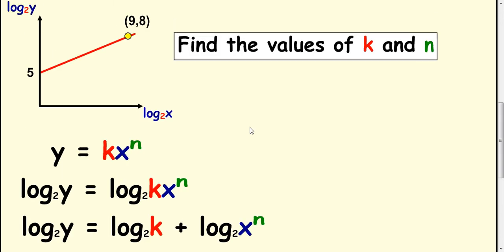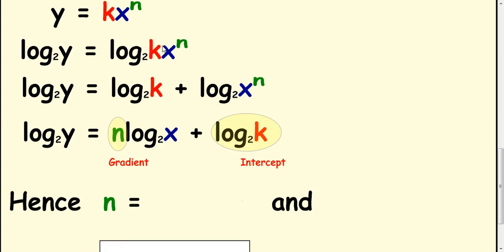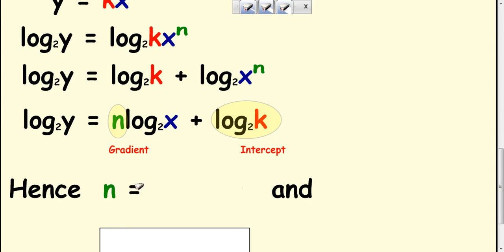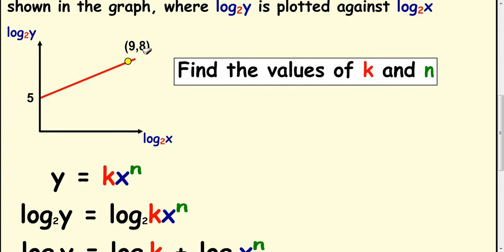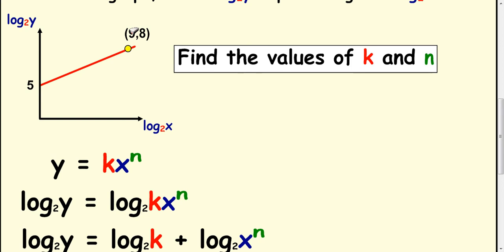So, what we can do now is we can look back up here and we can see, I can work out the gradient from here doing delta y over delta x. And also know my intercept is 5. So, if I do delta y over delta x, I'm going to get 8 take away 5 and 9 take away 0. Because this coordinate here is 0, 5.